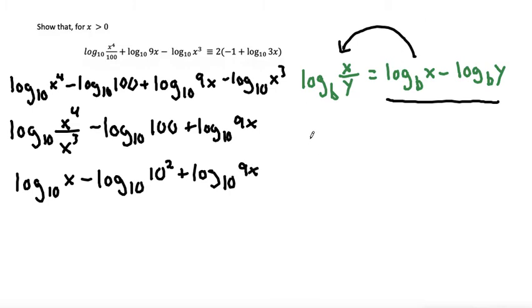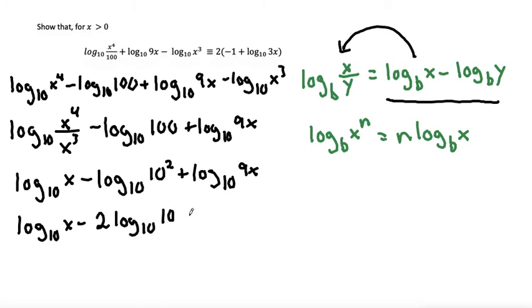Once we write 100 as 10 squared, we can use the rule that says log base b of x to the power of n, then we can kick that exponent down to the front to make it n log base b of x. So I'm going to kick this square down to the front to make this log base 10 of x minus 2 log base 10 of 10, and then plus log base 10 of 9x.